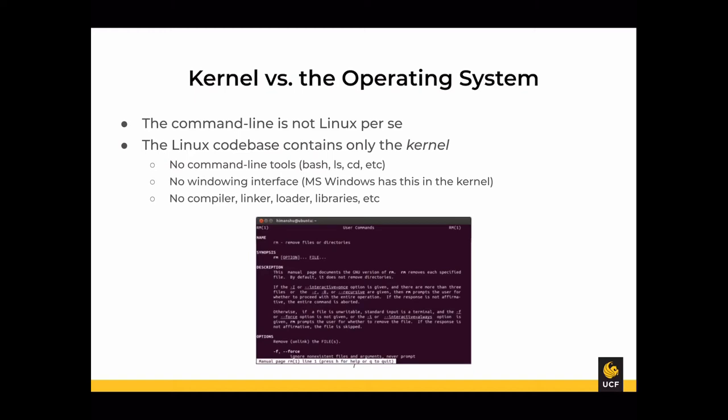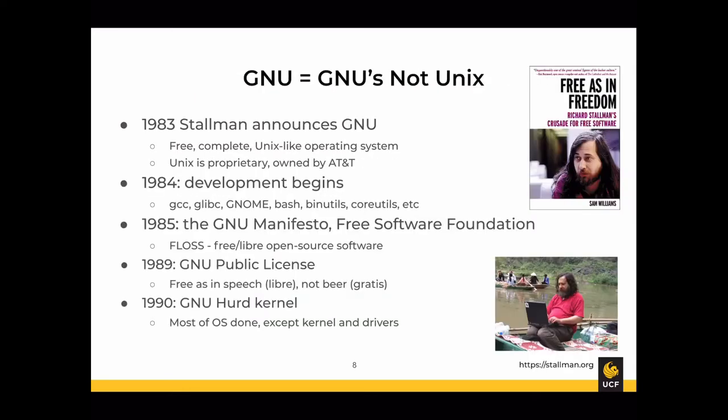For a typical Linux OS distribution, system software tools come from a different organization called GNU — a recursive acronym standing for GNU's Not Unix. The G stands for GNU, which expands to GNU's Not Unix, and so on ad infinitum.